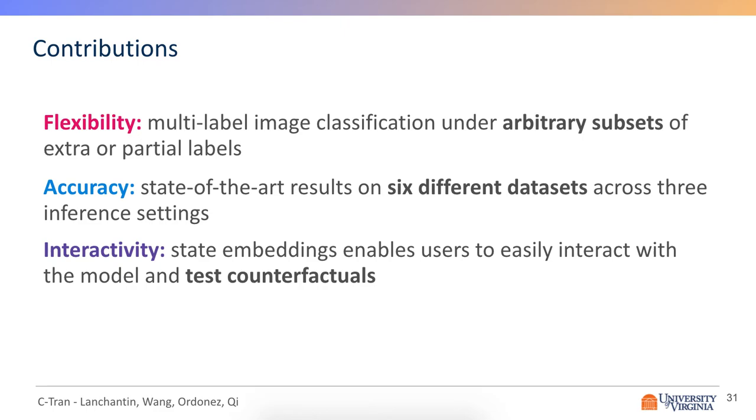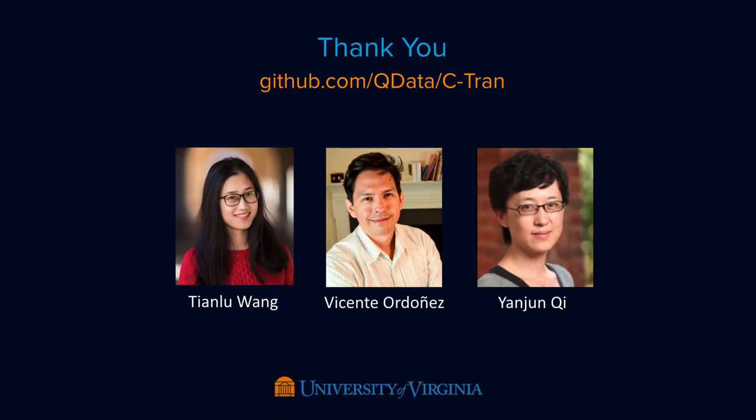So the main contributions of this work are that we introduce a flexible model for multi-label image classification under arbitrary subsets of extra or partial labels. And we show that this method is accurate on six different datasets across three different inference settings. Our proposed method allows for users to interact with the model and intervene or test counterfactuals. So with that, I want to thank my collaborators, and our code is available on GitHub.